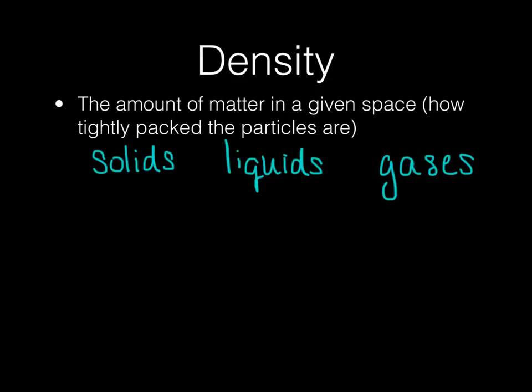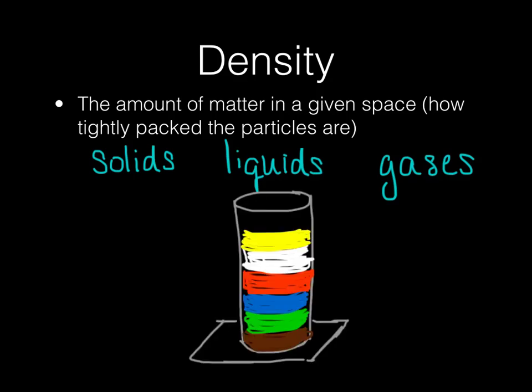Density does not just deal with solids, but it also deals with liquids and gases. Let's take a look at this graduated cylinder, which has a variety of liquids in it. Where the liquid sits in the graduated cylinder depends on its density. Look at the very bottom — this is maple syrup. Maple syrup is very, very thick, very heavy, very dense, so it sinks all the way to the bottom.